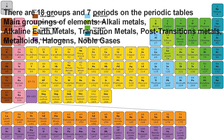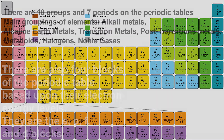There are 18 groups and 7 periods on the periodic table. The main groupings of the elements are alkali metals, alkaline earth metals, transition metals, post-transition metals, metalloids, halogens, and noble gases.